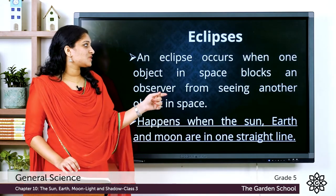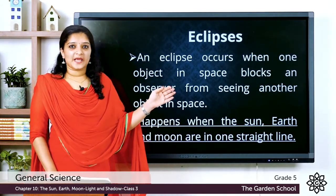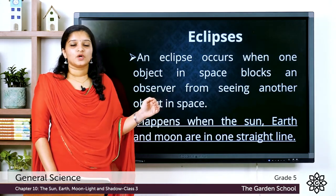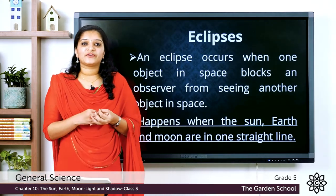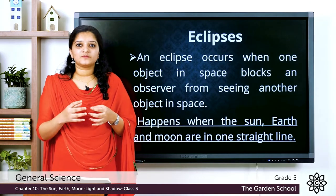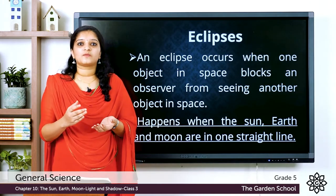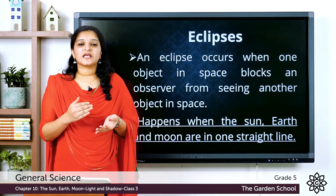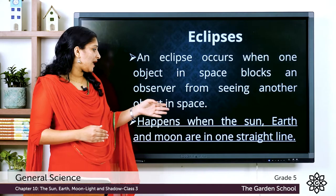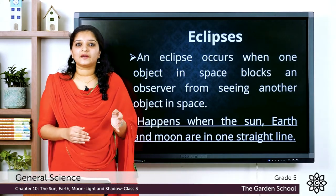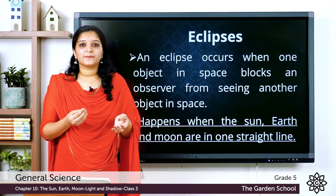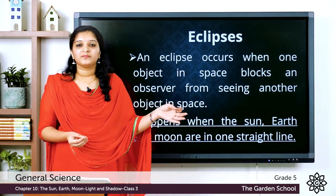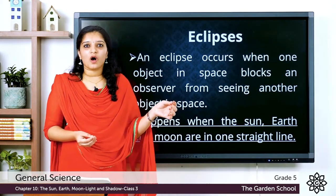An eclipse occurs when one object in space blocks an observer from seeing another object. It is a phenomenon in which one object blocks our vision in observing another object in the solar system. Eclipses exist when the Sun, Earth, and the Moon are in one straight line — that is, during the revolving process when they come into a straight line.